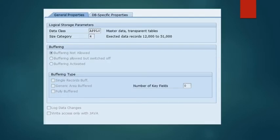Which looks like this one. The contents under technical settings are categorized into two different properties: general properties and database specific properties. General properties also has logical memory parameters, table sharing, buffering, buffering type, and data changes.